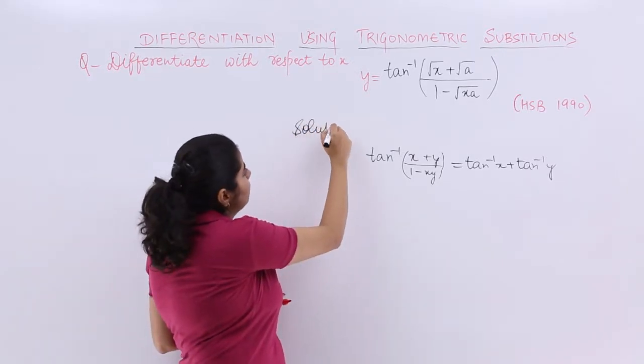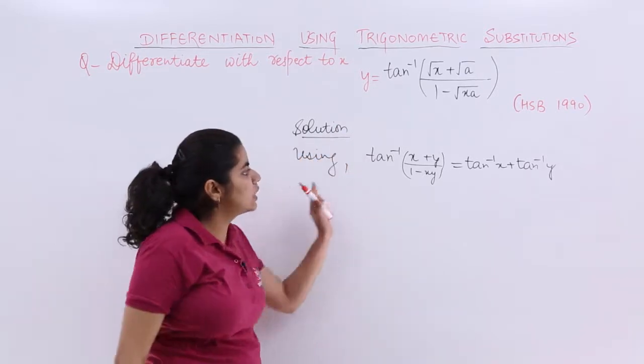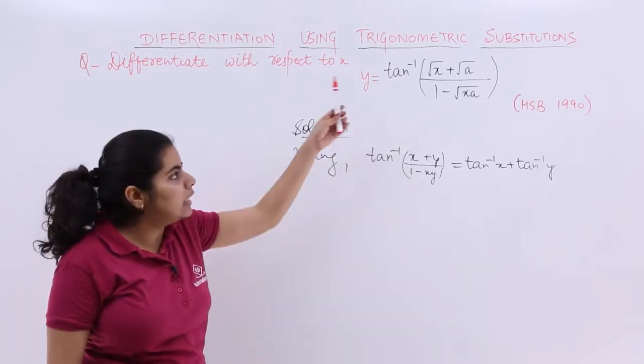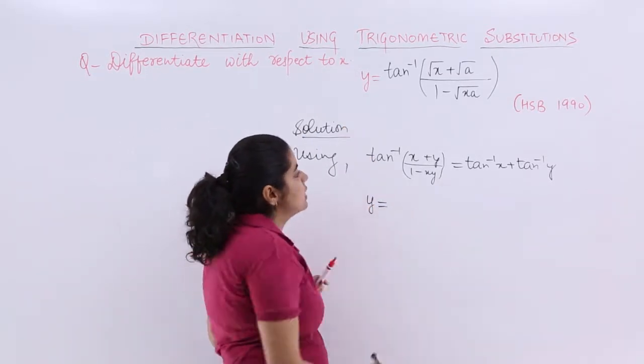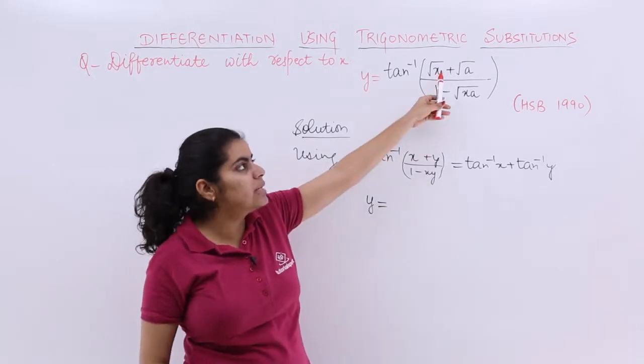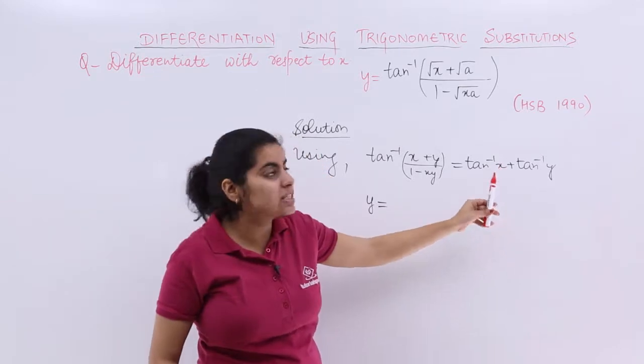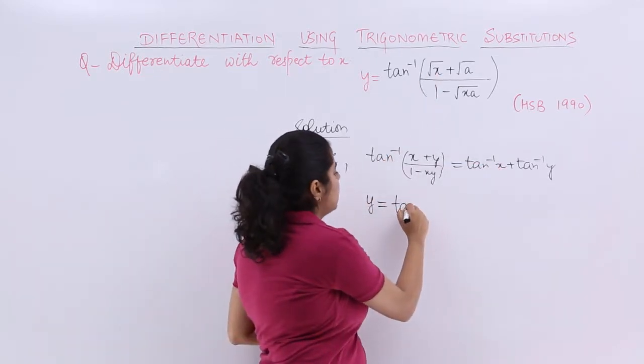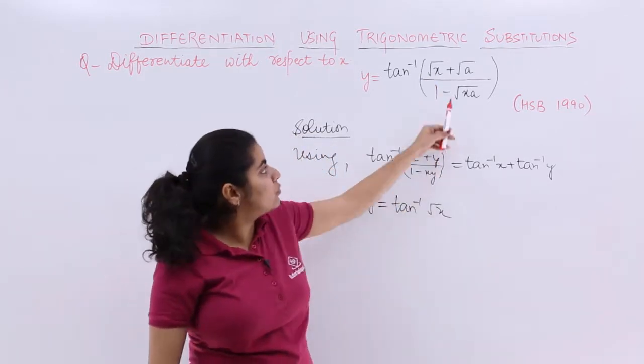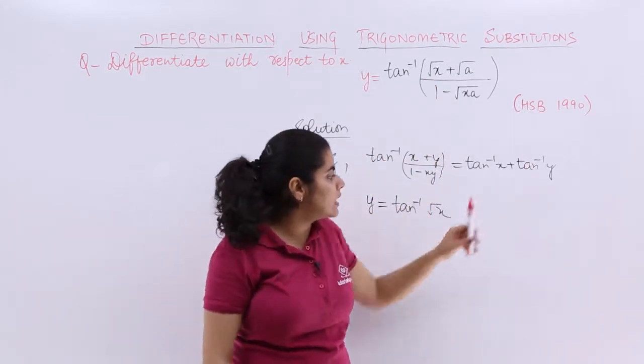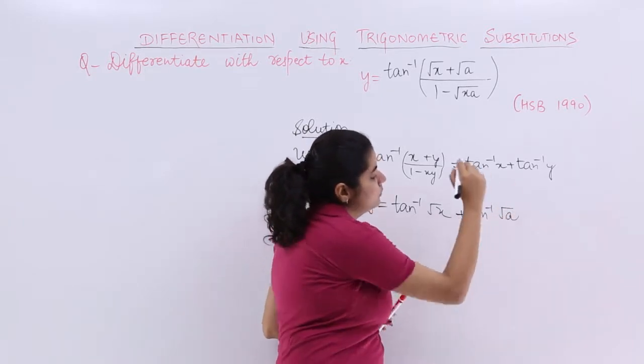I write the heading 'solution' and 'using this formula'. What does y become now? Carefully observe: y equals tan inverse √x plus tan inverse √a, because in place of x we have √x and in place of y we have √a.